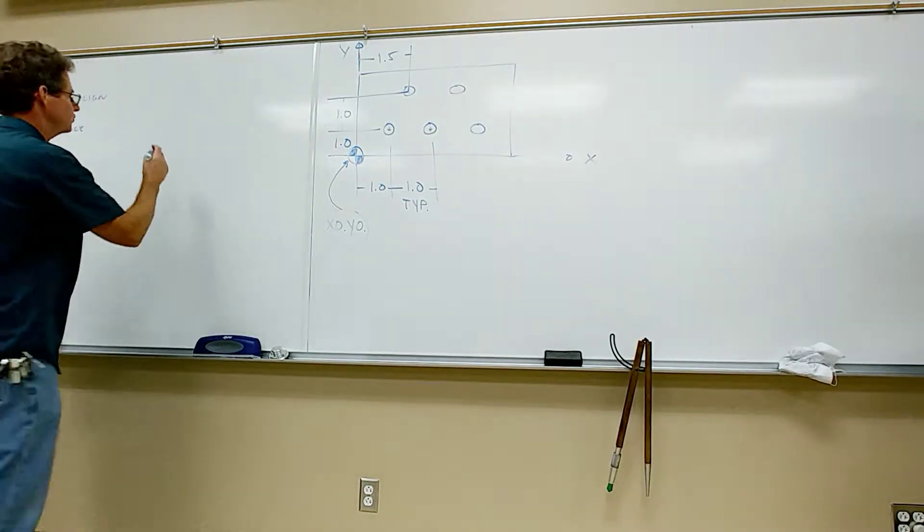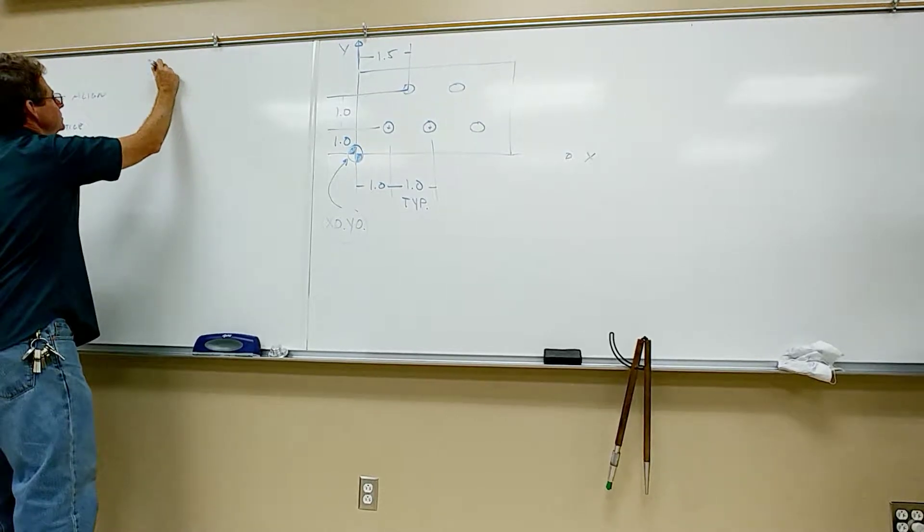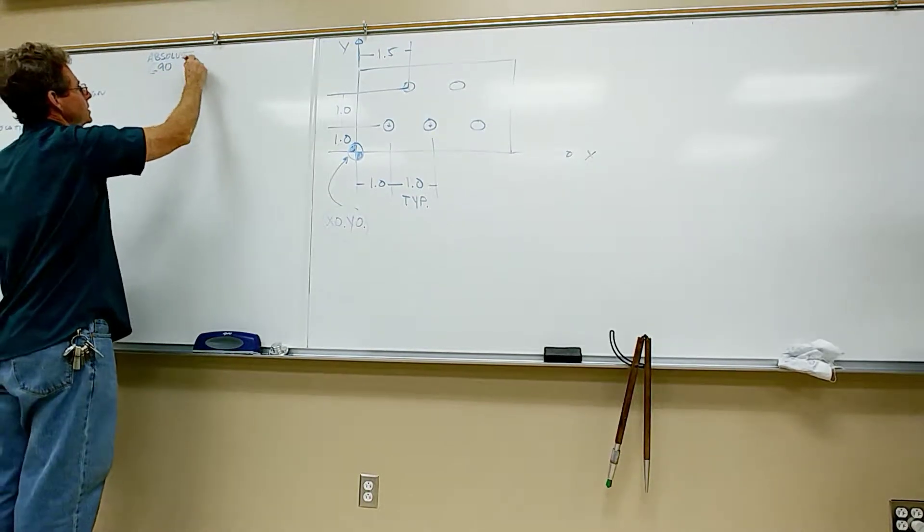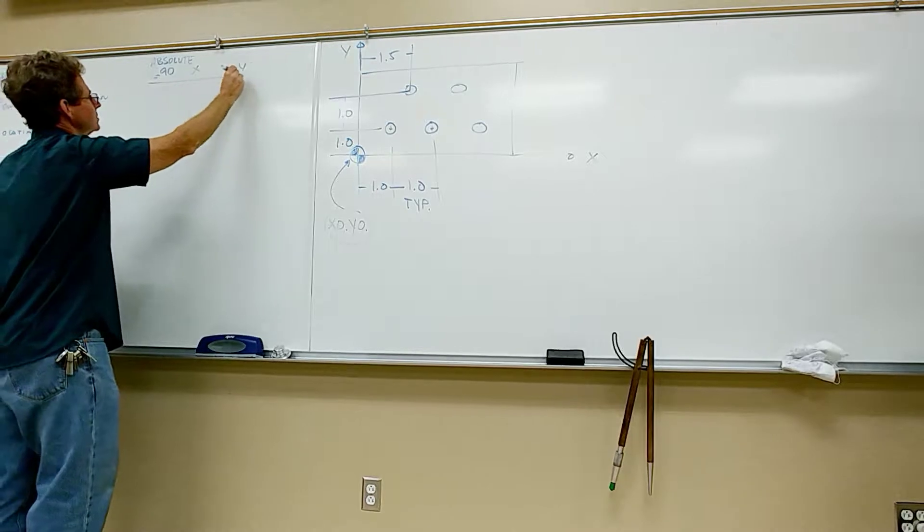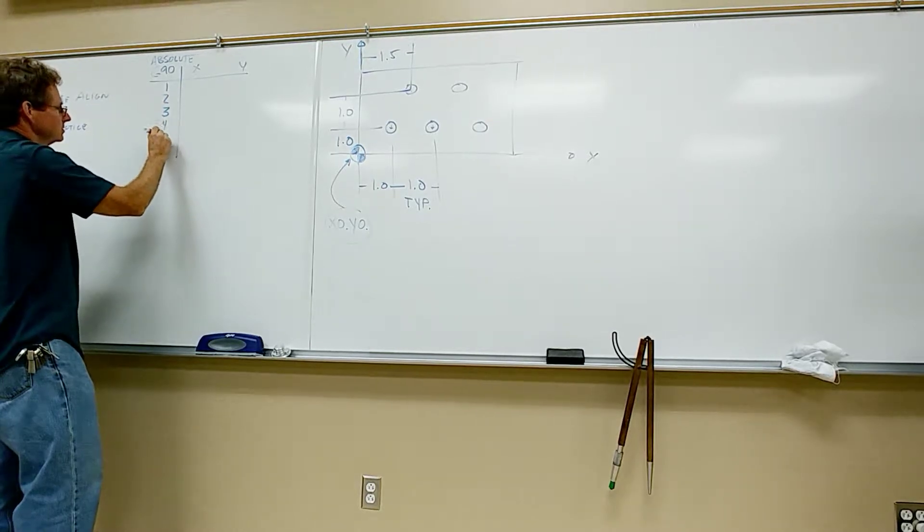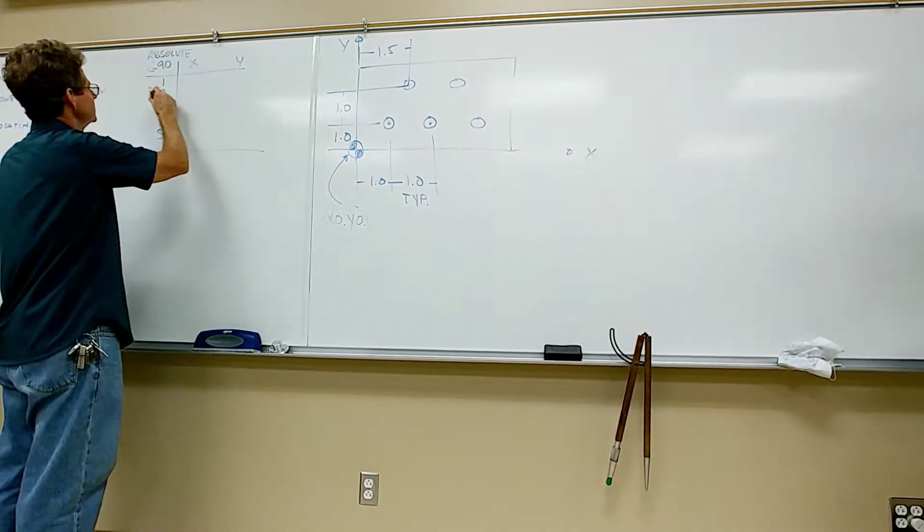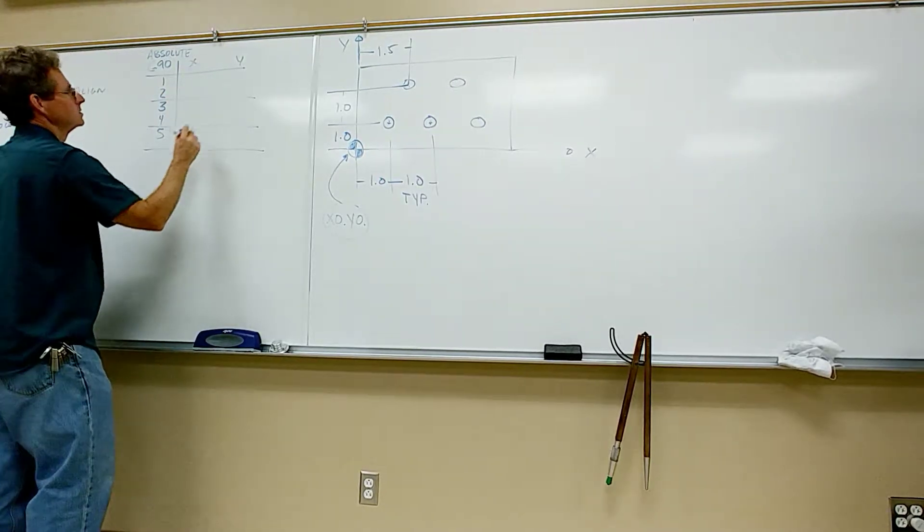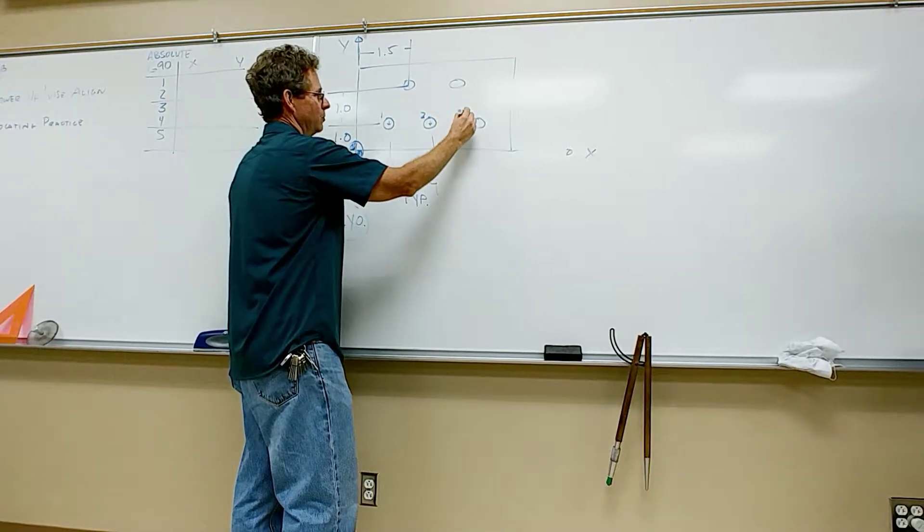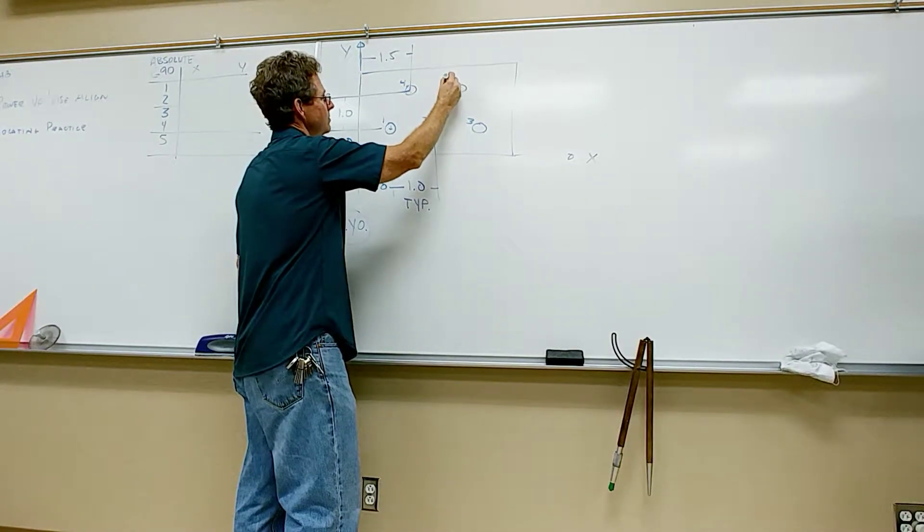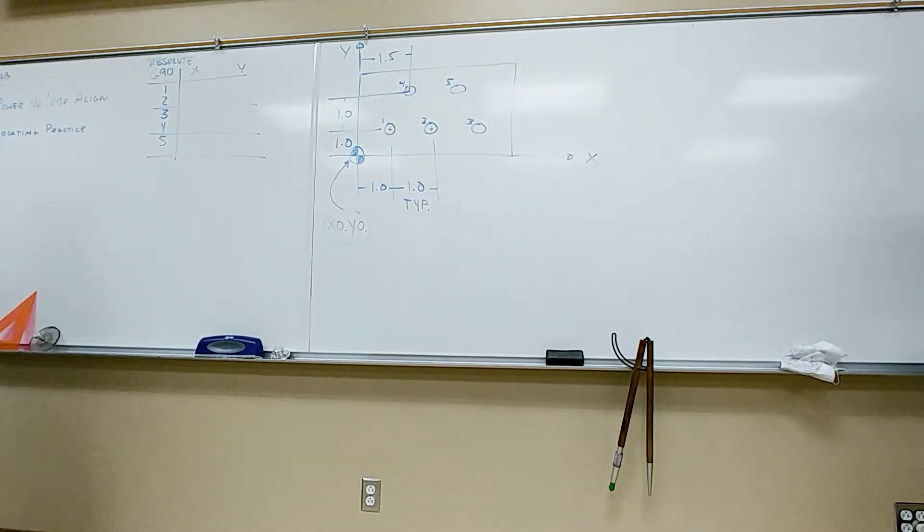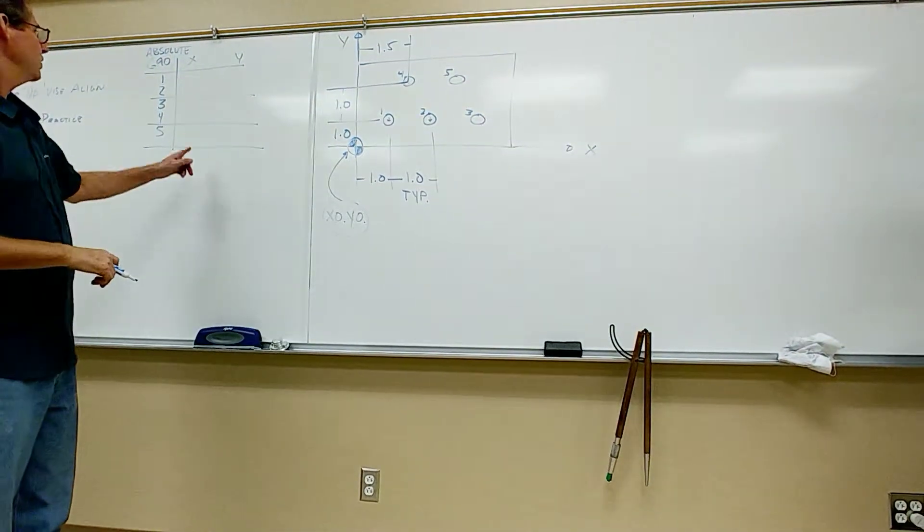So we're gonna do these points two different ways. First of all, we're gonna do an absolute, which is G90. I'll say x, y coordinates, gonna make a little chart, five points. I need to number the points. It doesn't really matter that much doing these absolute, because all the points are going to be tied in the lower left corner. But when I get to incremental, it's going to make a big difference, because the distance would definitely change if you did them out of sequence. So we got all these points absolute.